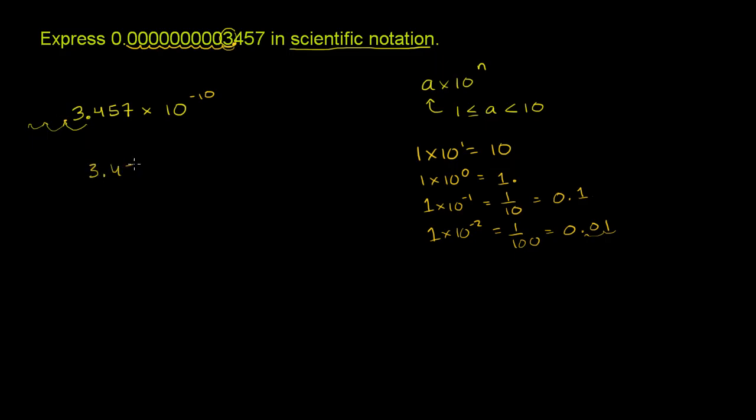Let me just rewrite it. So 3.457 times 10 to the negative 10 power. So in general, what you want to do is you want to find the first non-zero number here. Remember, you want a number here that's between 1 and 10, and it can be equal to 1, but it has to be less than 10. 3.457 definitely fits that bill. It's between 1 and 10. And then you just want to count the leading zeros between the decimal and that number, because that tells you how many times you have to shift the decimal over to actually get this number up here. So we have to shift this decimal 10 times to the left to get this thing up here.